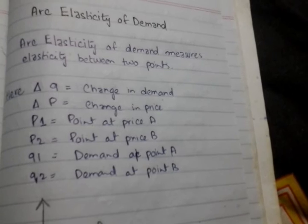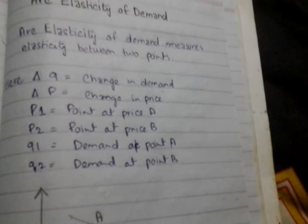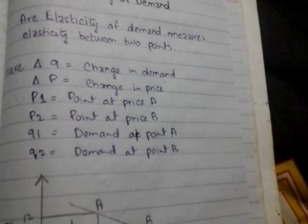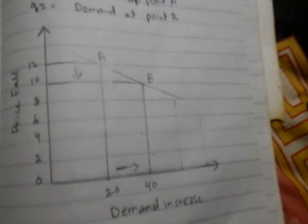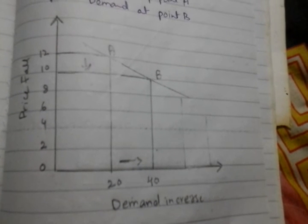While in arc elasticity of demand, we measure elasticity between two points. As we can see in the diagram from point A to B, as the price falls from 12 to 10, there is an increase in demand from 20 to 40.